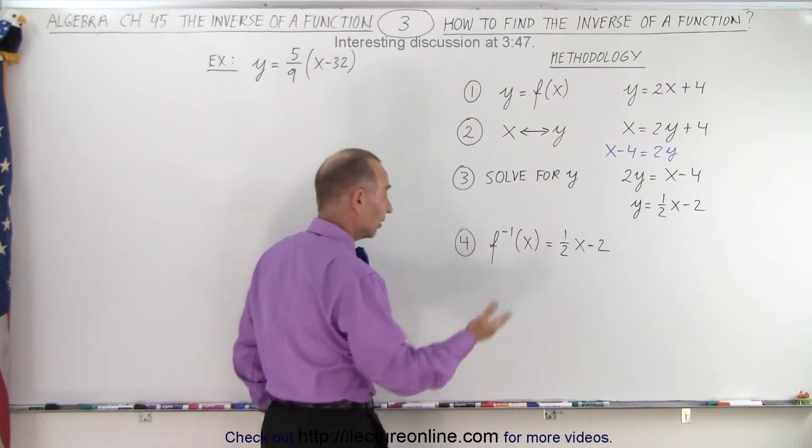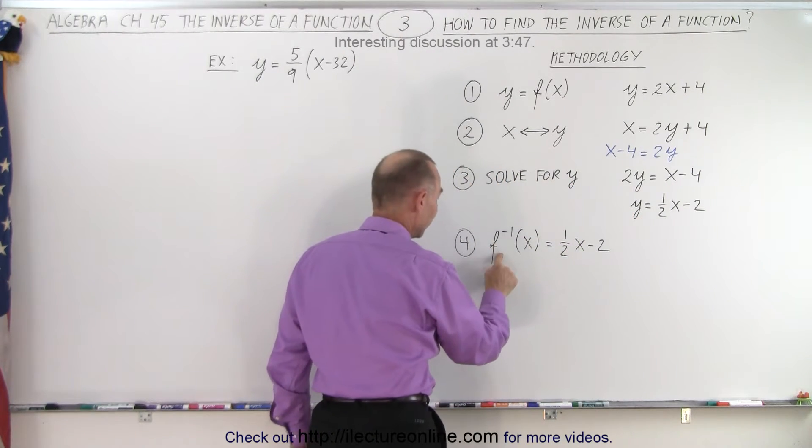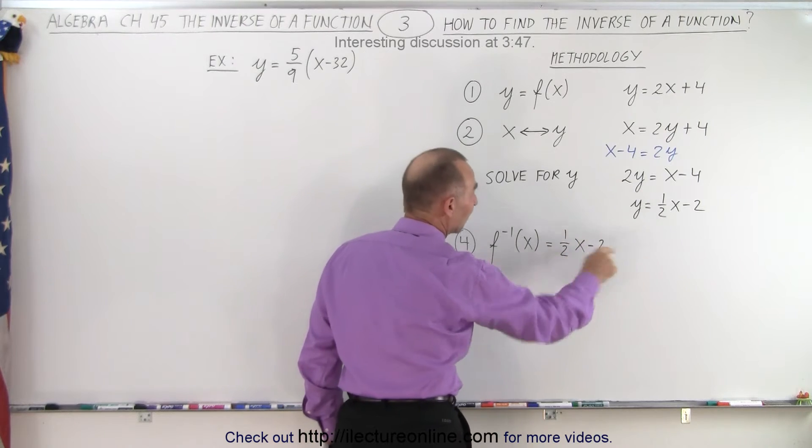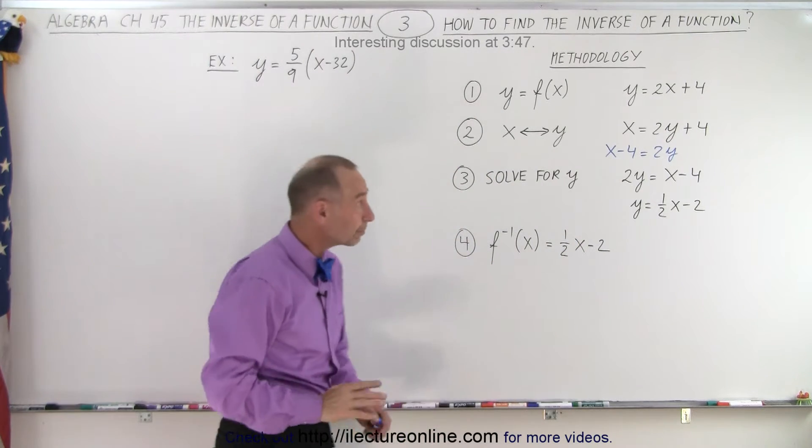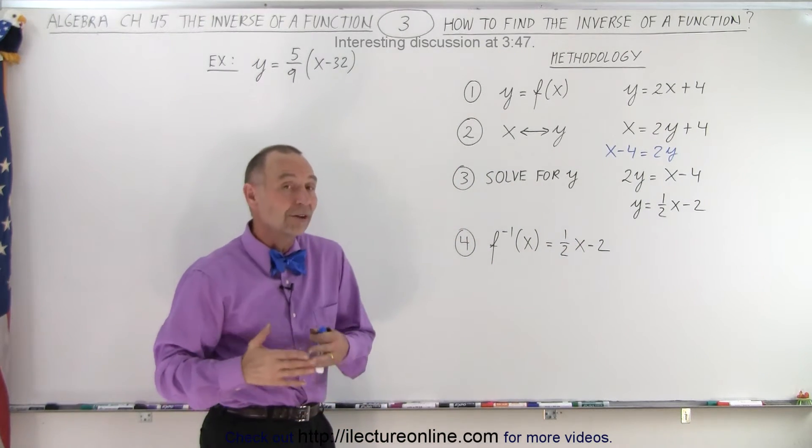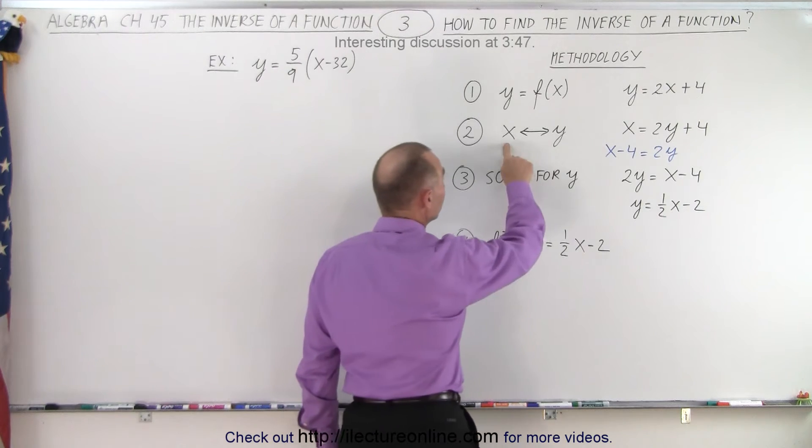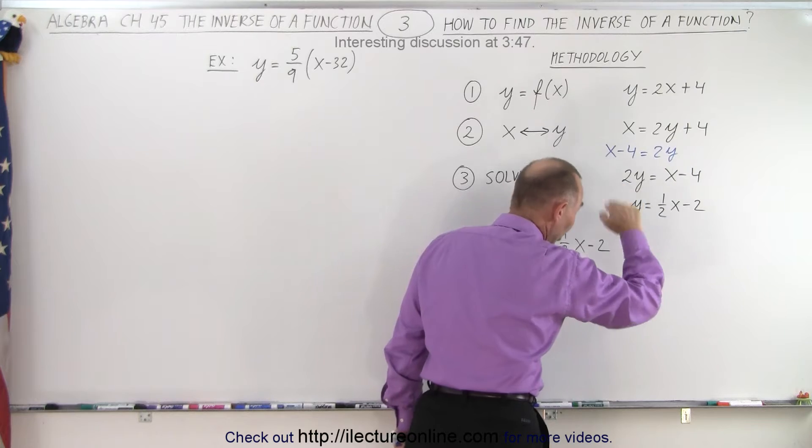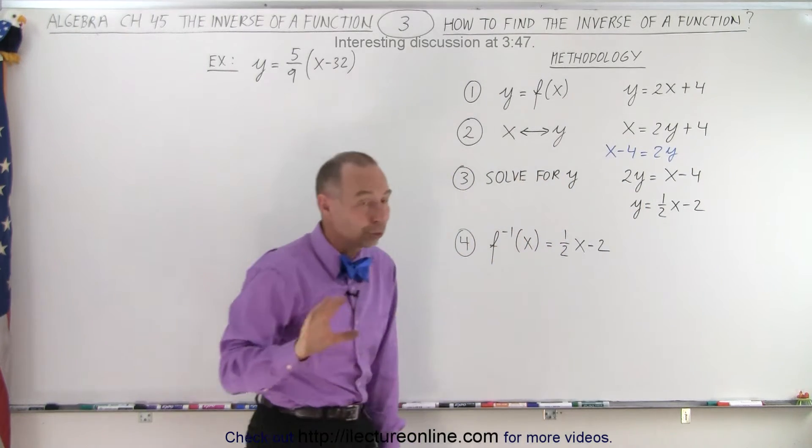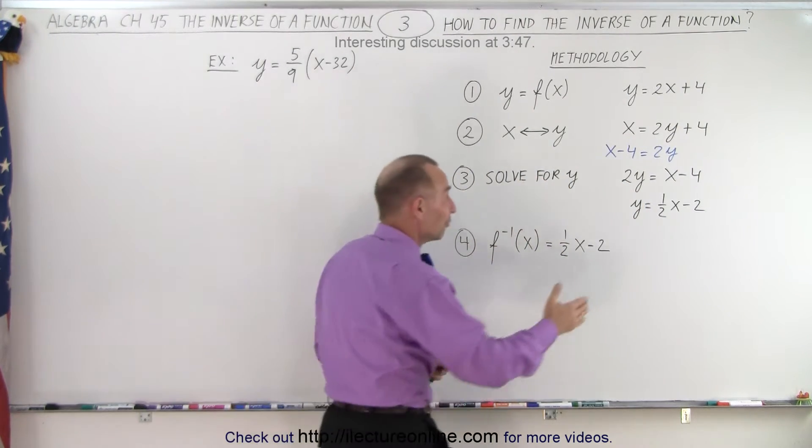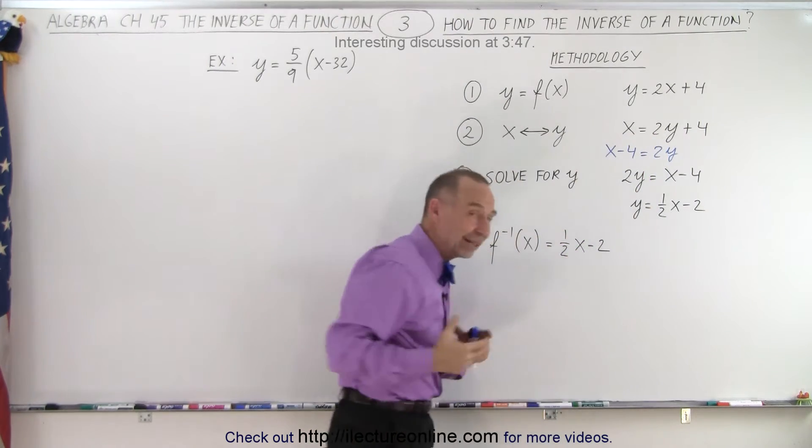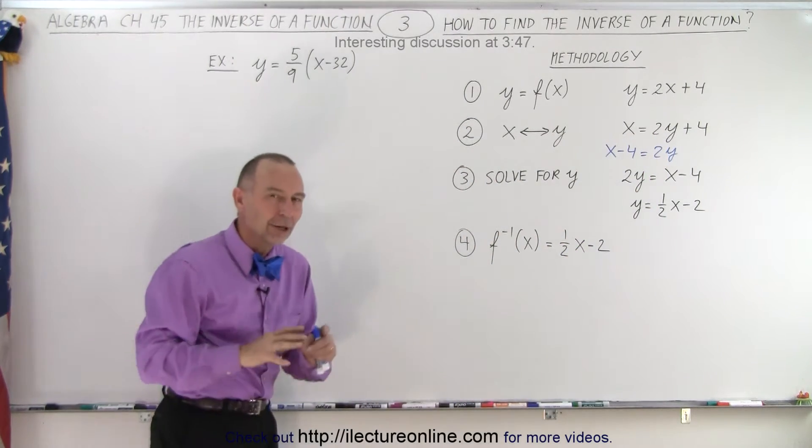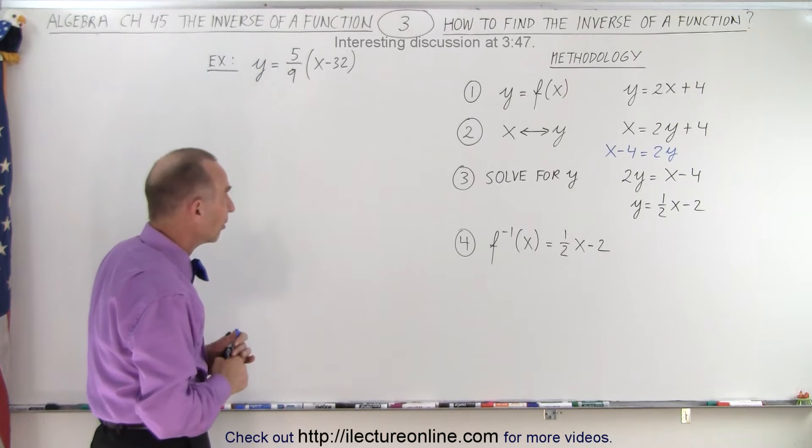And then all you have to do is say well there's the inverse of the function. The inverse of the function equals 1 half x minus 2. And so it's actually rather simple. All you do is interchange x and y and then solve what you end up with for y. Now true in some cases the algebra to solve for y after that could get kind of complicated. No question about it but the procedure is relatively simple.